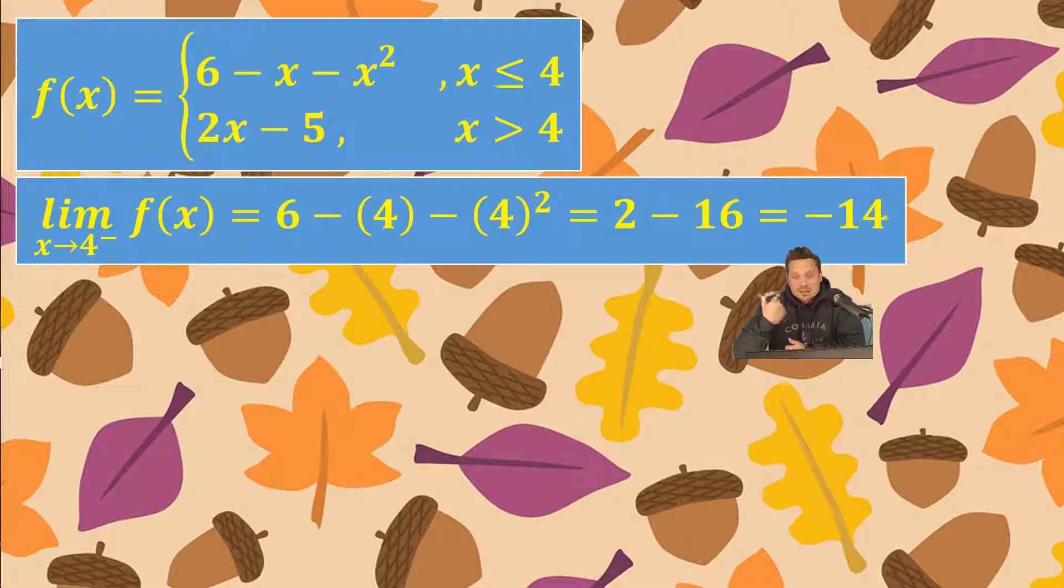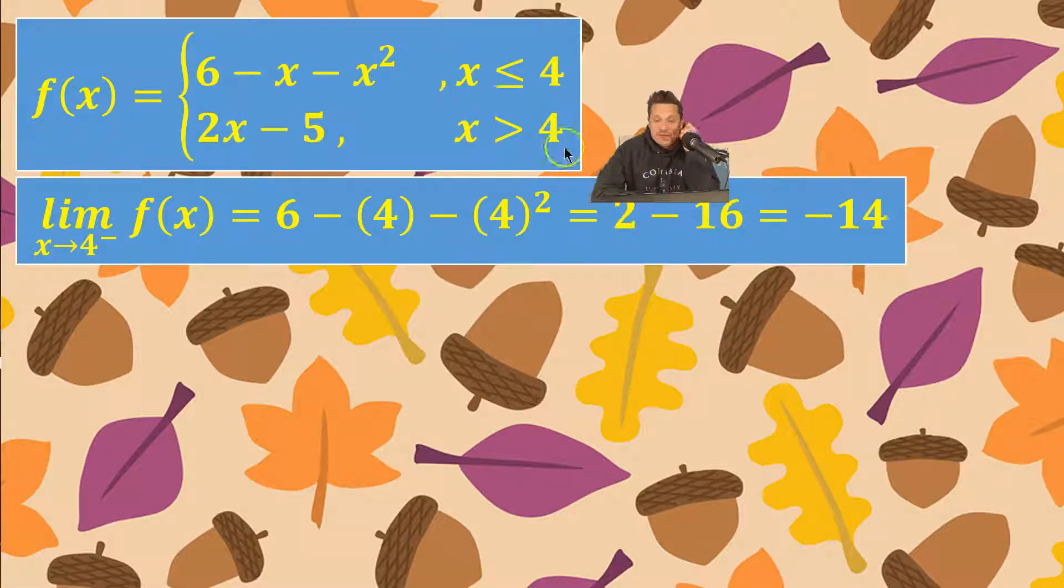Now let's see what happens to the limit when x approaches 4 from the right. You have to be very careful because when you say right what you really mean are values of x that are bigger than 4. Since 2x minus 5 applies when x is greater than 4, you would use that piece.